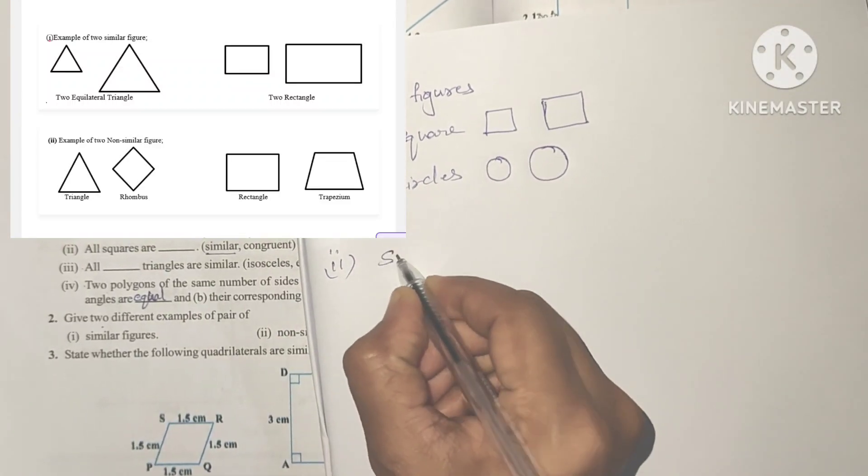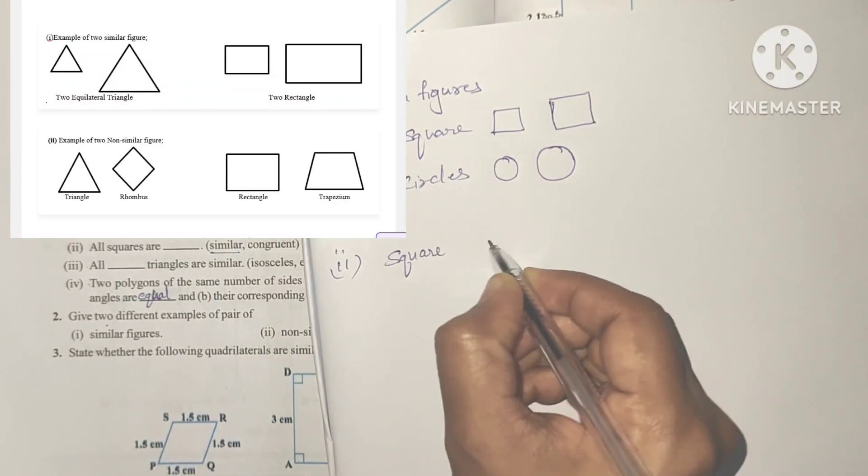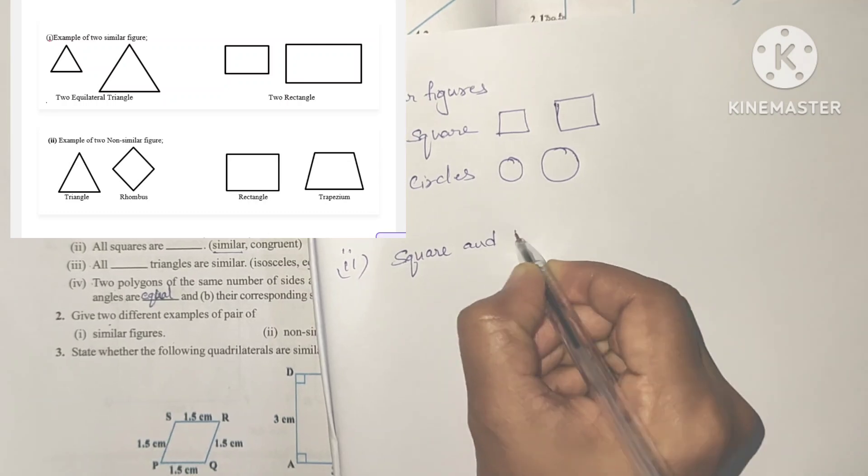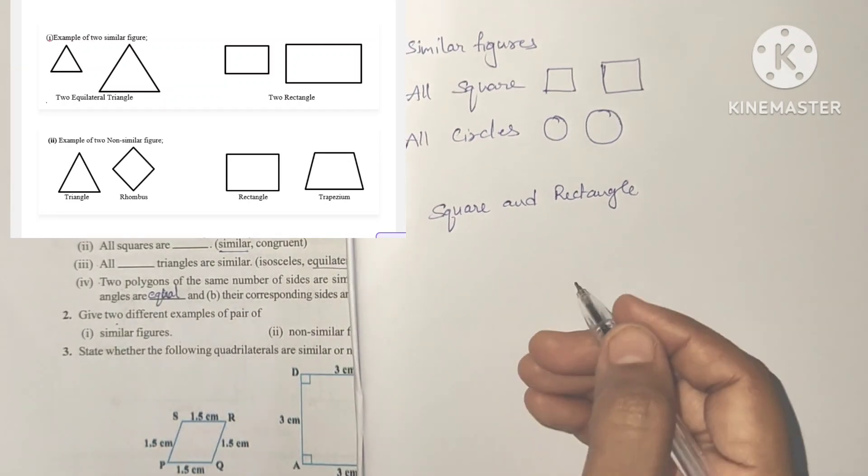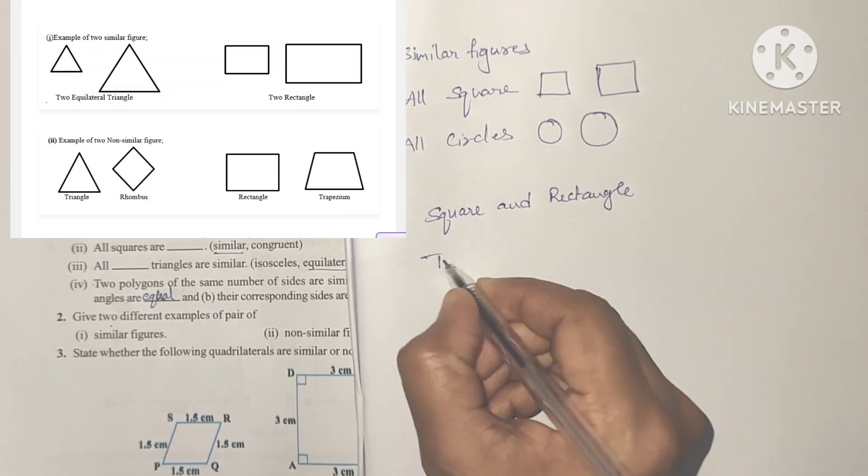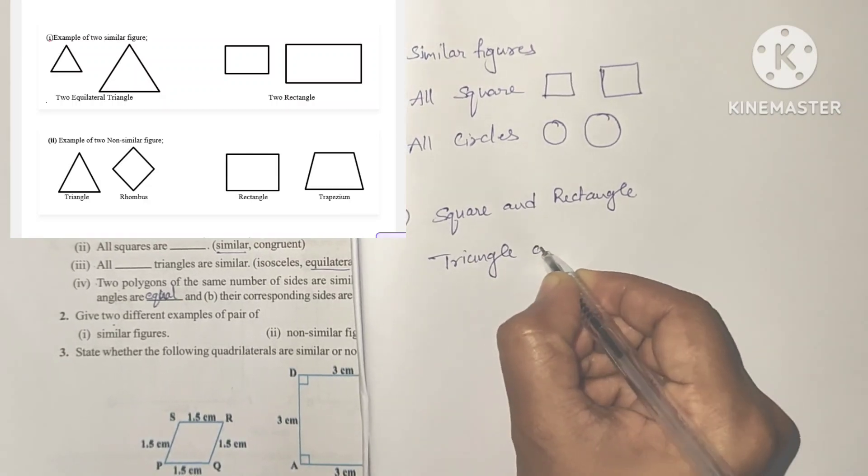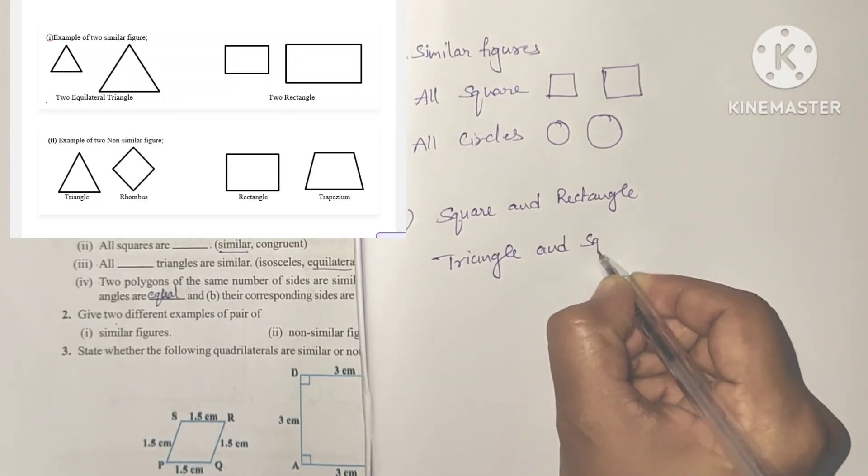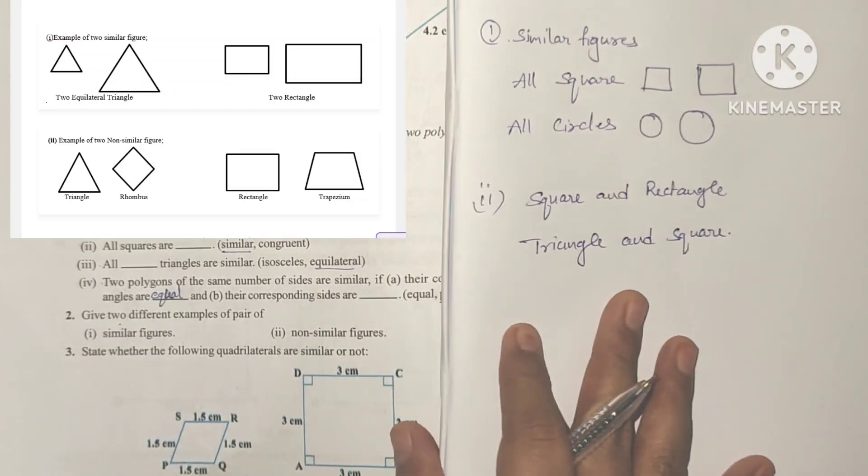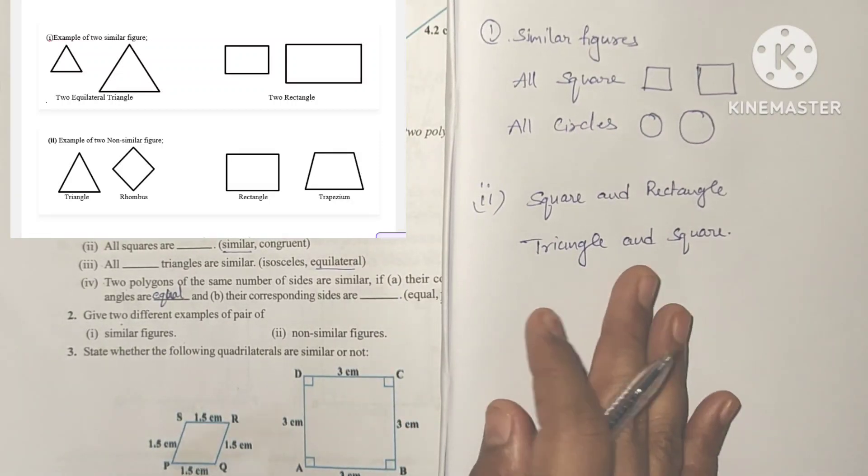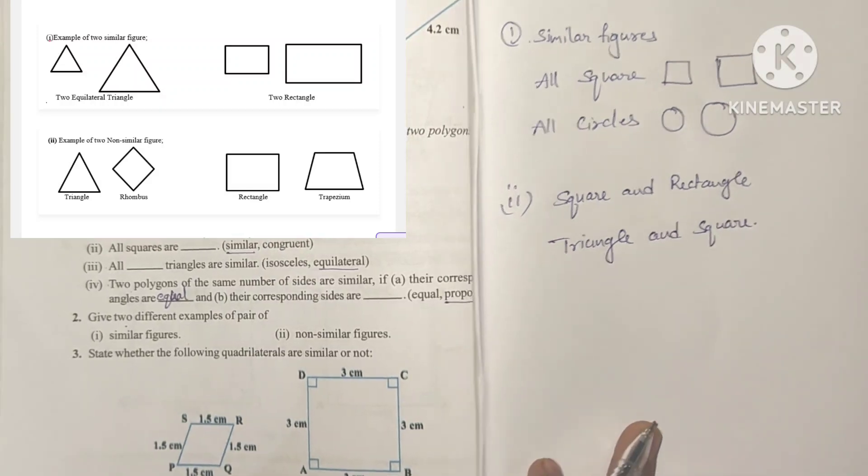This is the example of one mark or two marks questions. Next, non-similar figures: one triangle, one rhombus - no; one rectangle, one trapezium - no; one square and rectangle - okay, these are two different figures, triangle and square. They don't see the same here.